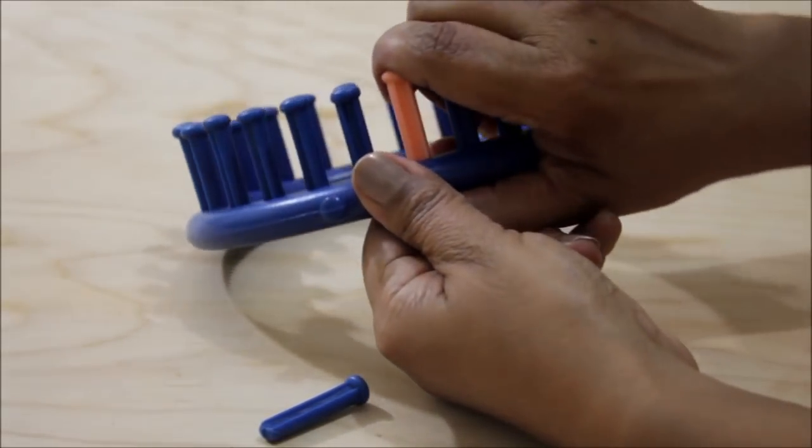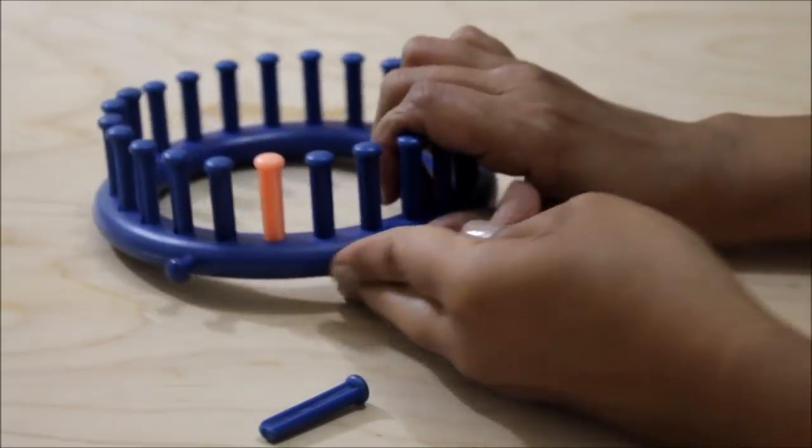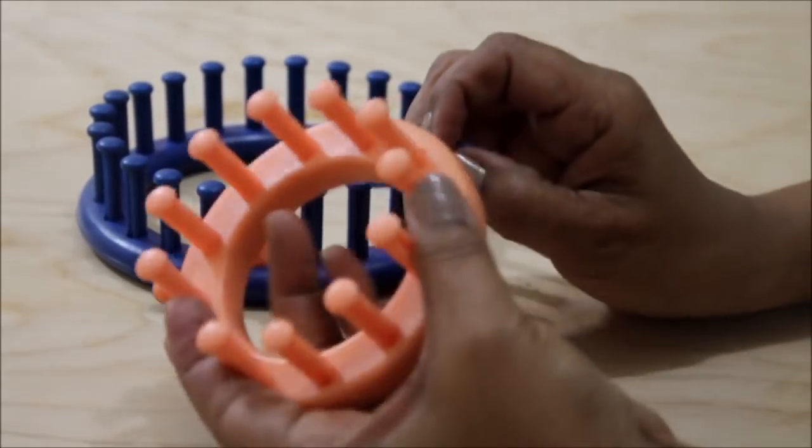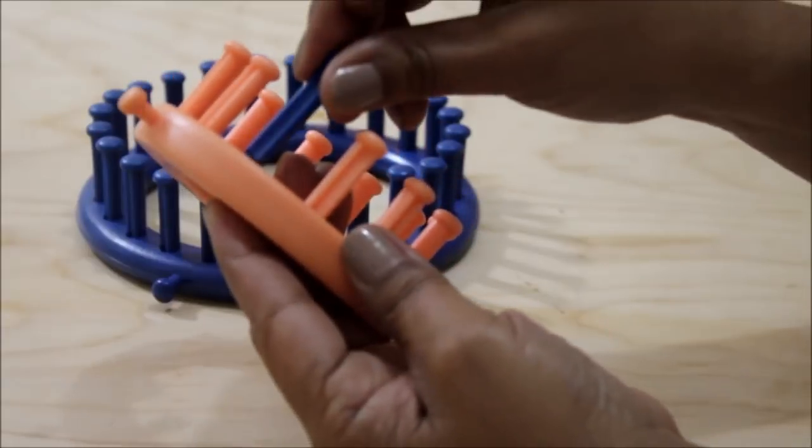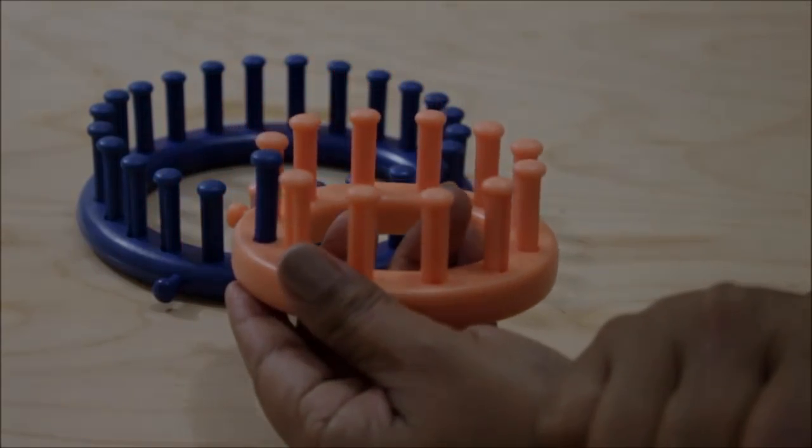Like I normally use stitch markers but if you don't like stitch markers you can just take another peg from a different color loom and use that to mark your loom. How cool is that?